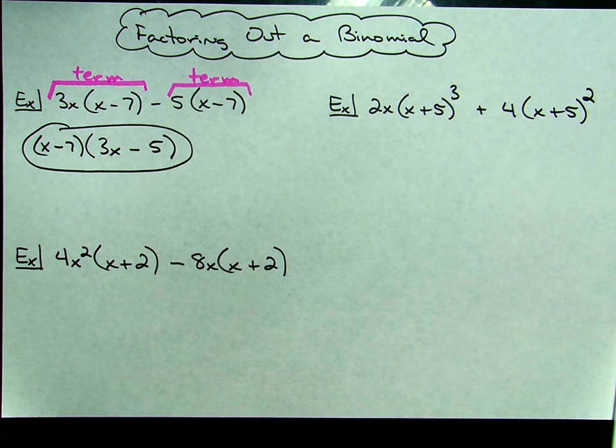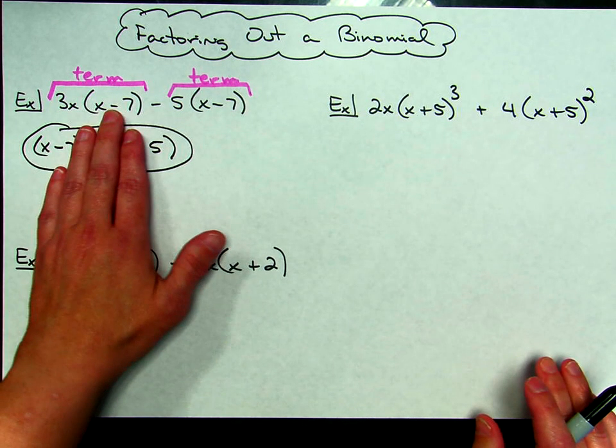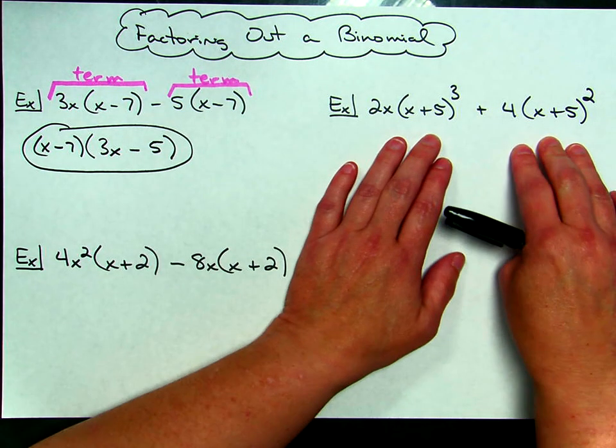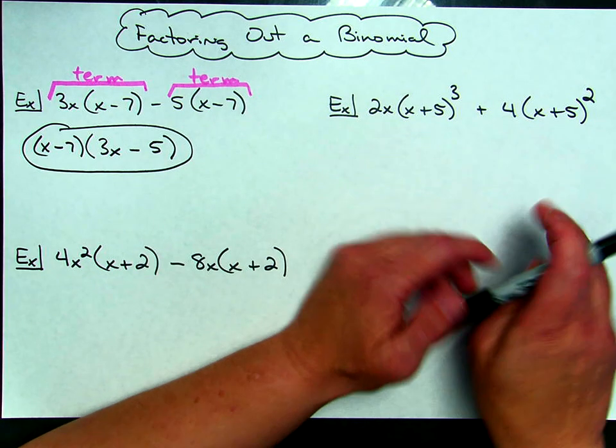Now, if we step it up just a little bit, in both of those terms, I only was able to take out one binomial. Looking at this second example, again, I've got two terms.